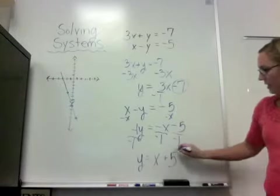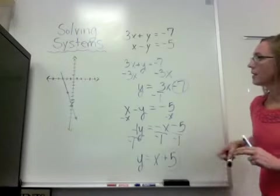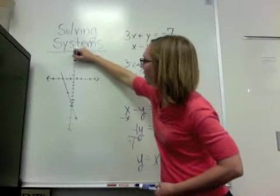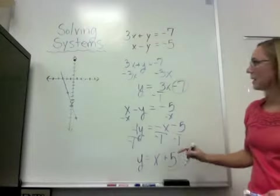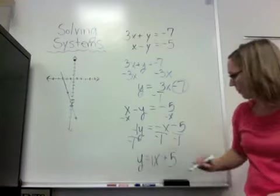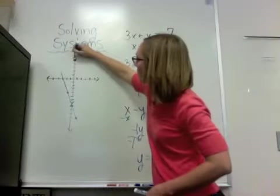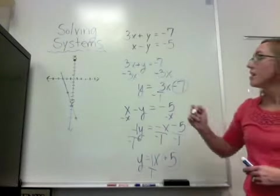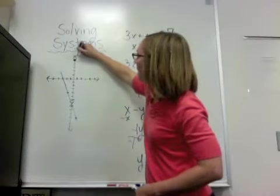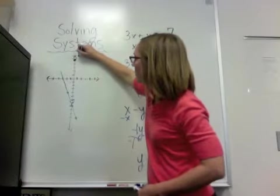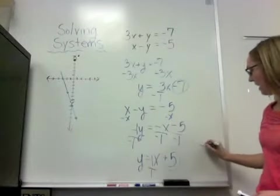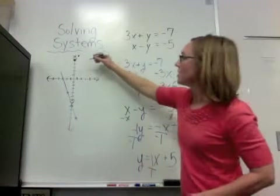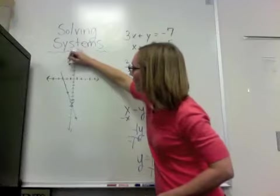So this graph crosses the y-axis at 5. 1, 2, 3, 4, 5. It has a slope of 1. Negative fractions. So you have a rise and a run. I'm going to rise 1 and run 1. Or I can also have like a negative 1 over negative 1 because that would still equal 1. So I could go down 1 and to the left 1.